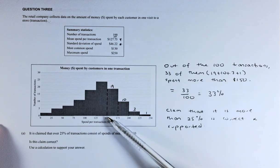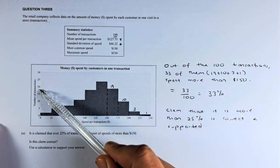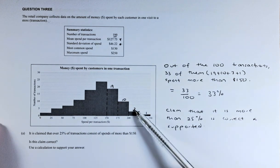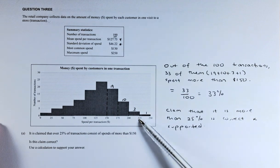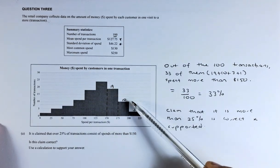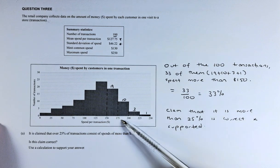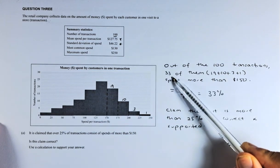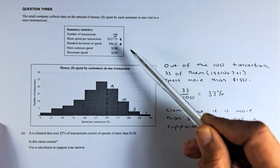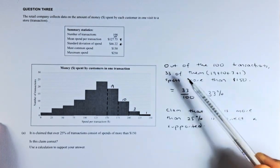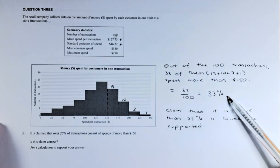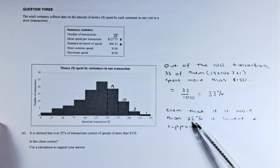So more than $150 is here. $150 to $175 is $19. If you look at the graph there, $175 to $200 is going to be $10. $200 to $225 is $3. And $225 to $250 is $1. So if you add up all these numbers, because they are all more than $150, $19 plus $10 plus $3 plus $1 is going to be $33 transactions. Because the total is $100, the percentage is $33 out of $100, which is 33%. So is the claim more than 25%? Of course it is because the claim is 33%, which is definitely more than 25%.